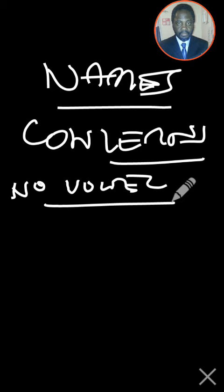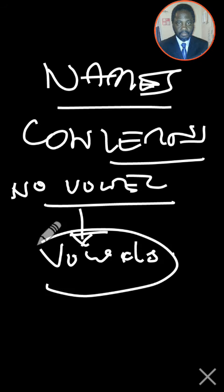Somewhere before the Lord Jesus was born, a special group of scribes took the Bible — by now they had more writing materials available — and they supplied the vowels back into it. So the vowels were input back into the original Bible. This is where it becomes important for us to talk about the name of God I was referring to, which is what people call Yahweh.